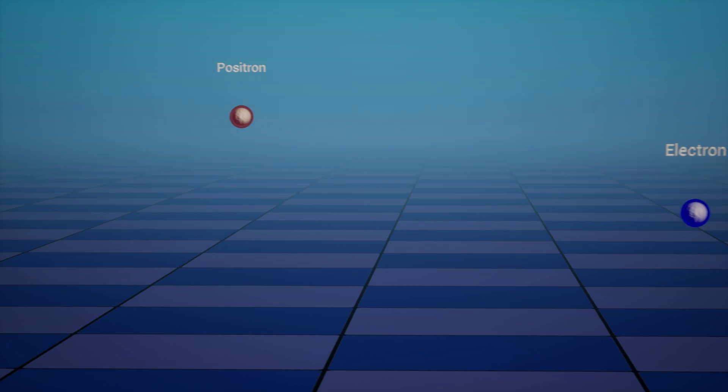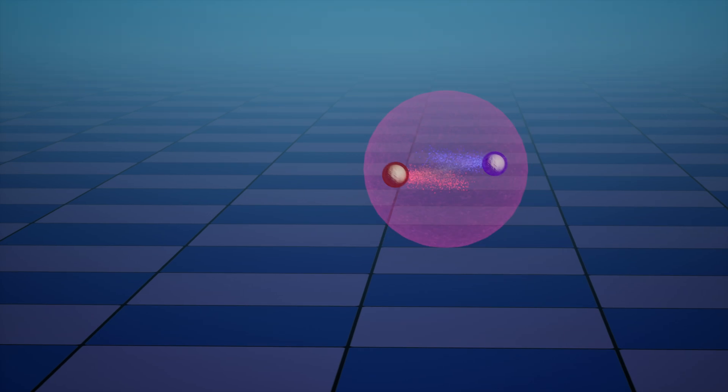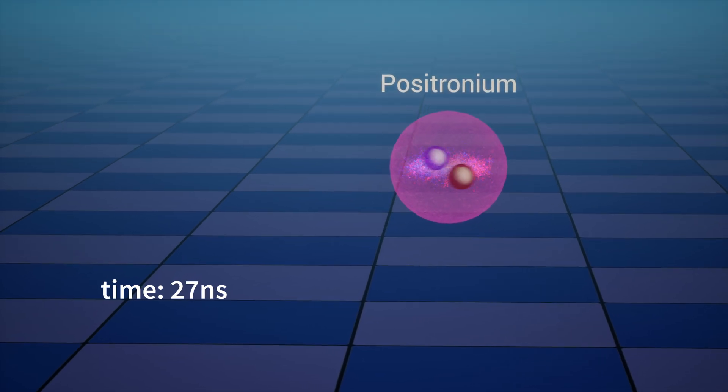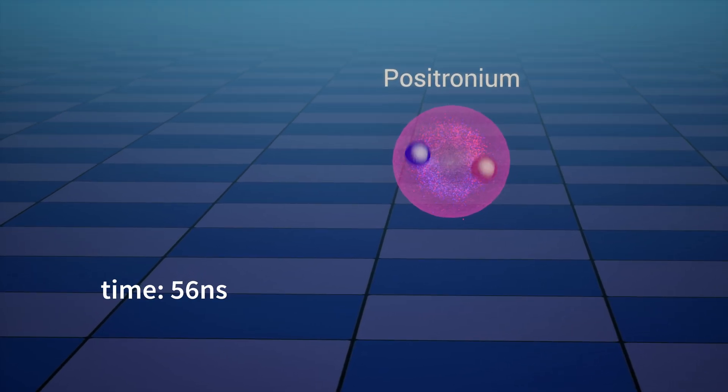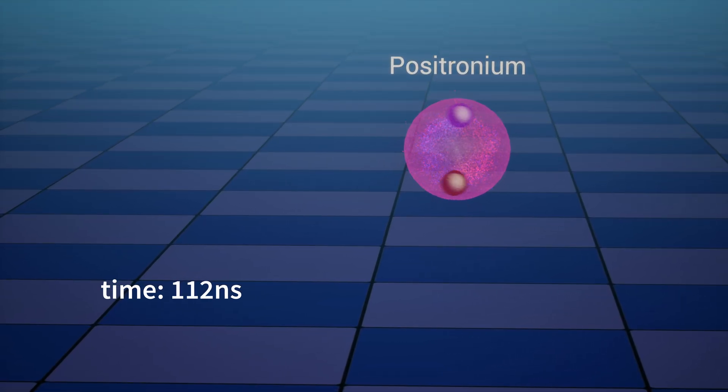Positronium is an atom. It's actually the lightest atom you can form in nature. It's so light it doesn't even exist on the periodic table. Why? Because it's made of an electron and its antimatter counterpart, a positron. And these two don't live together for long. They just stay alive for about 100 billionth of a second. That's a positronium atom.